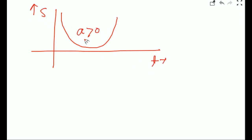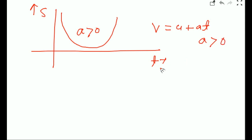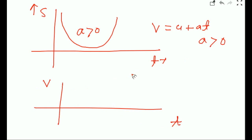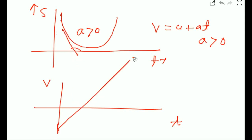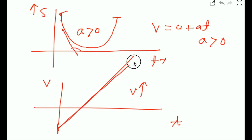For the second displacement-time graph case (upward parabola), acceleration a > 0. Plotting v = u + at with a > 0 means positive slope. Although we do not know the exact initial value, the velocity-time graph is a straight line that is linear and always increasing. For an upward parabolic s-t graph, velocity increases continuously, giving an increasing linear v-t graph.